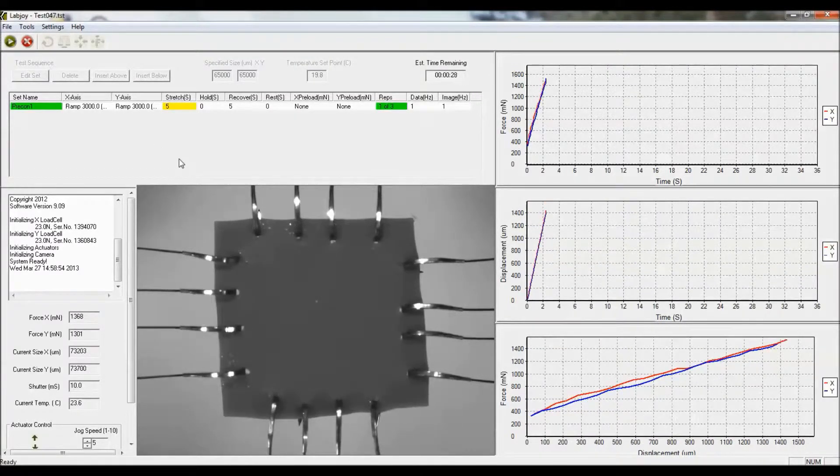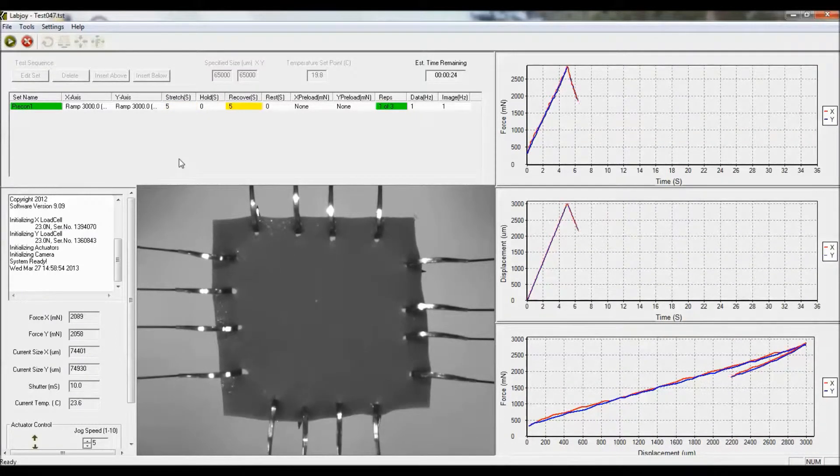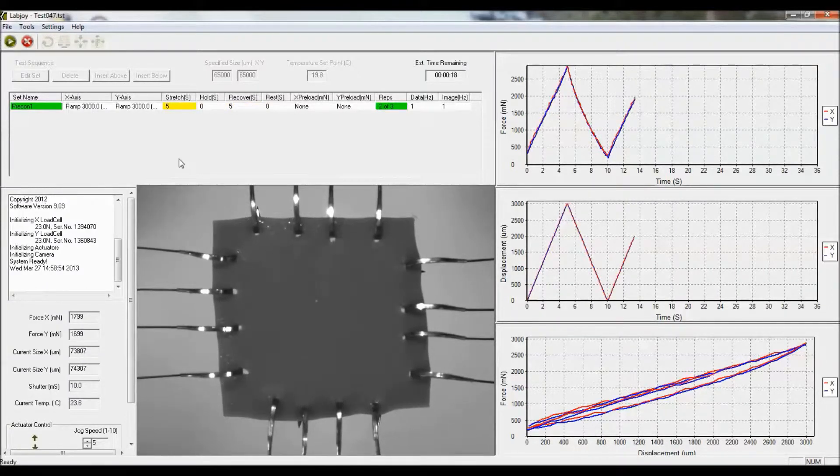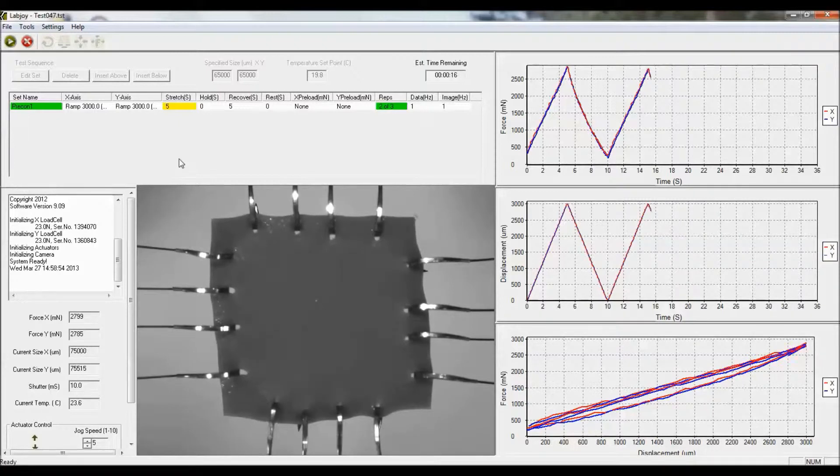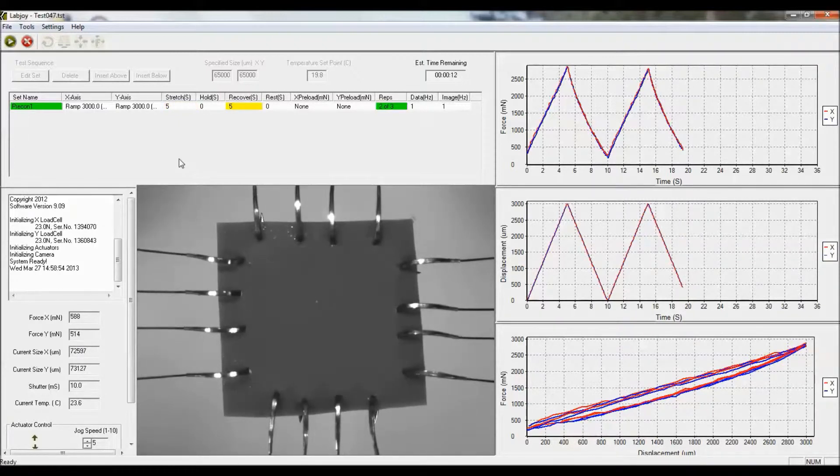And what we'll see on the right-hand side of the screen is the force versus displacement curve. In this case, we're going up to just under three newtons of force with our three millimeters of displacement. There is an isotropic material, so there isn't a lot of difference between x and y. And there's a little bit of a hysteresis loop, but it's pretty flat.